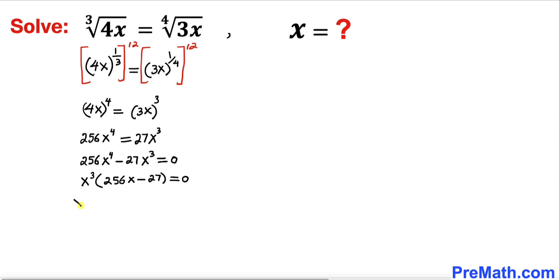The first one is going to be x^3 = 0, and the other one is 256x - 27 = 0. And now x^3 = 0 means x = 0 is one of our solutions.